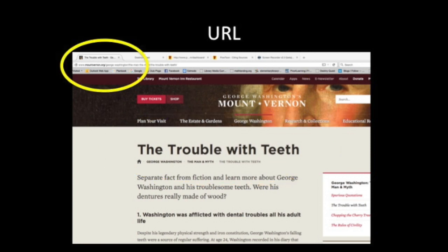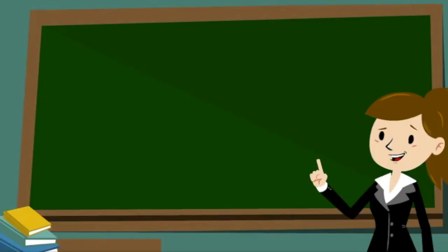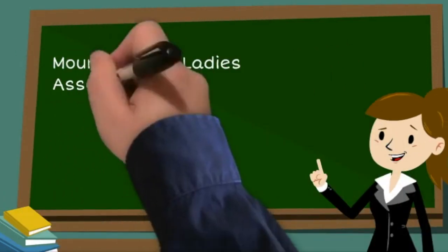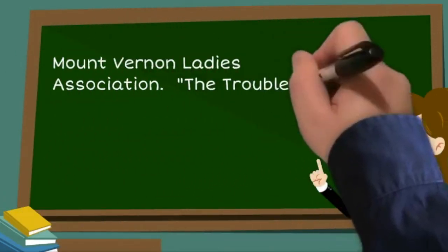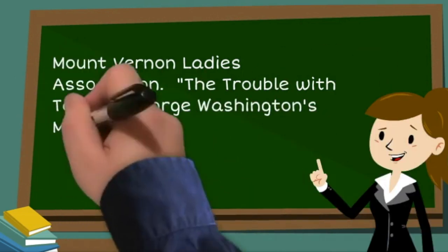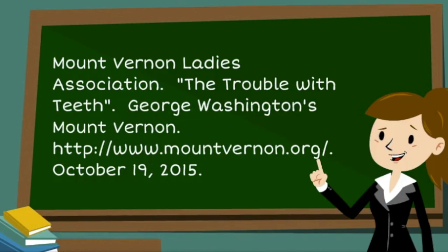Now the URL — this one's simple: www.mountvernon.org. And finally, today's date. Let's put it together. Author, period. Page title in quotation marks, then a period. Site name, period. URL, period. Date, period.